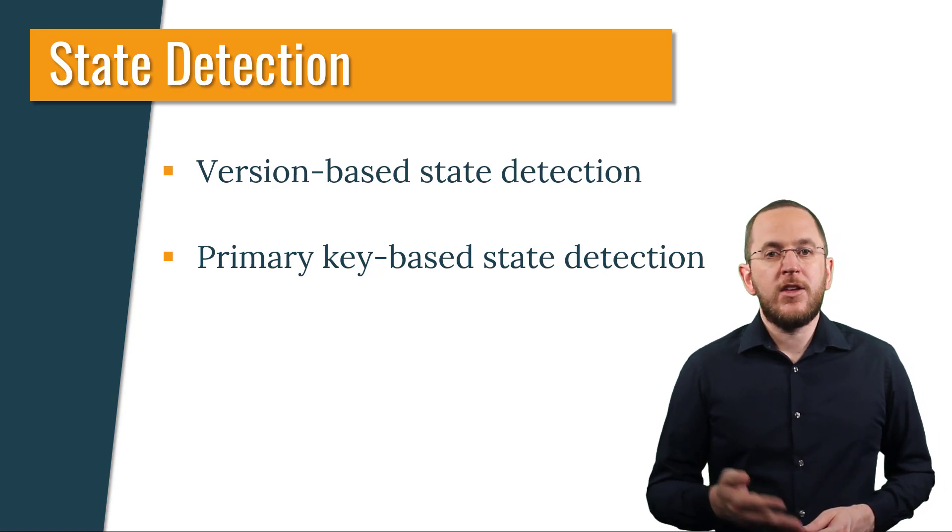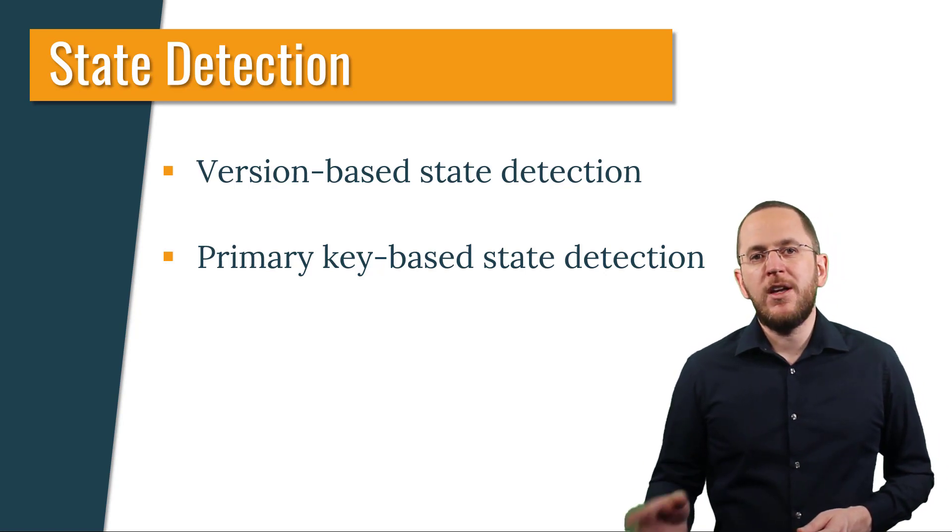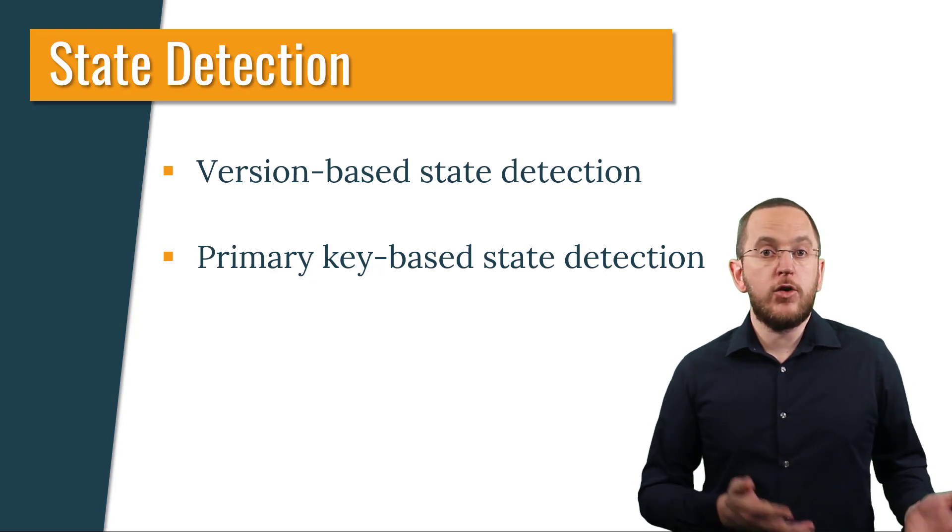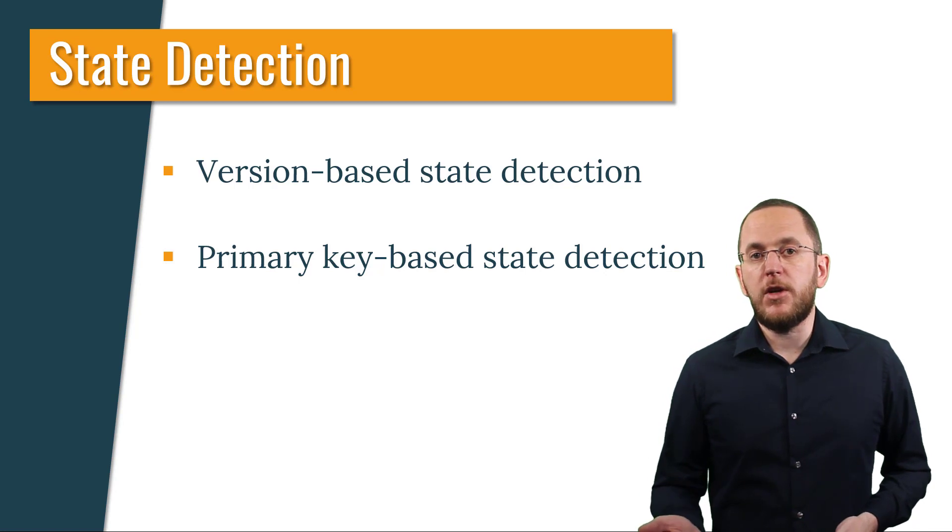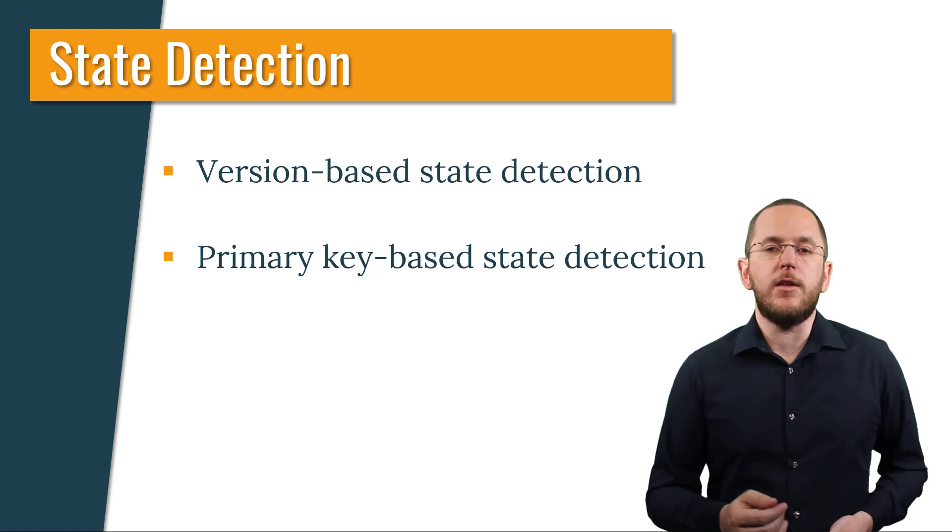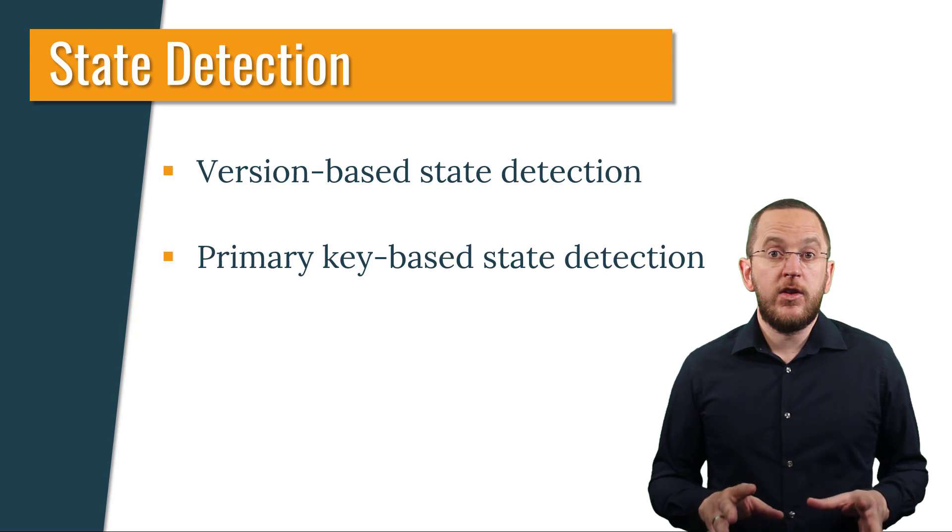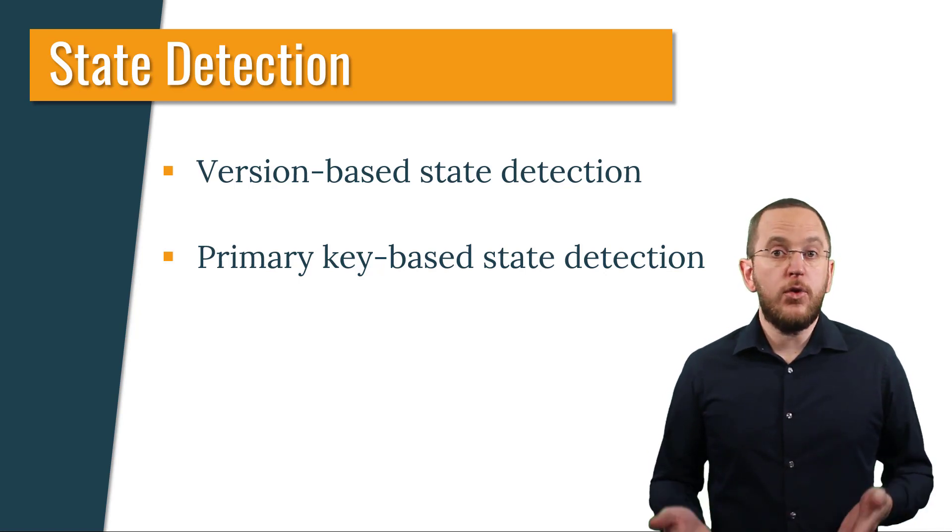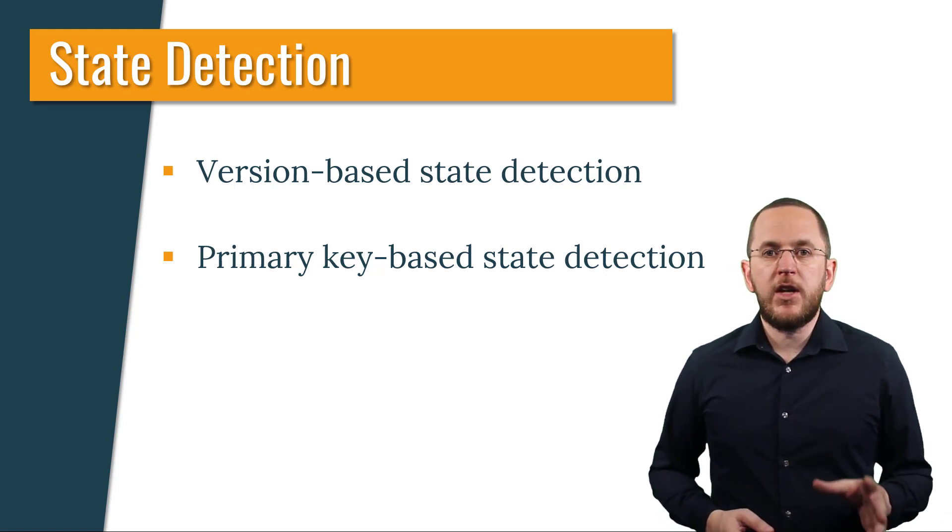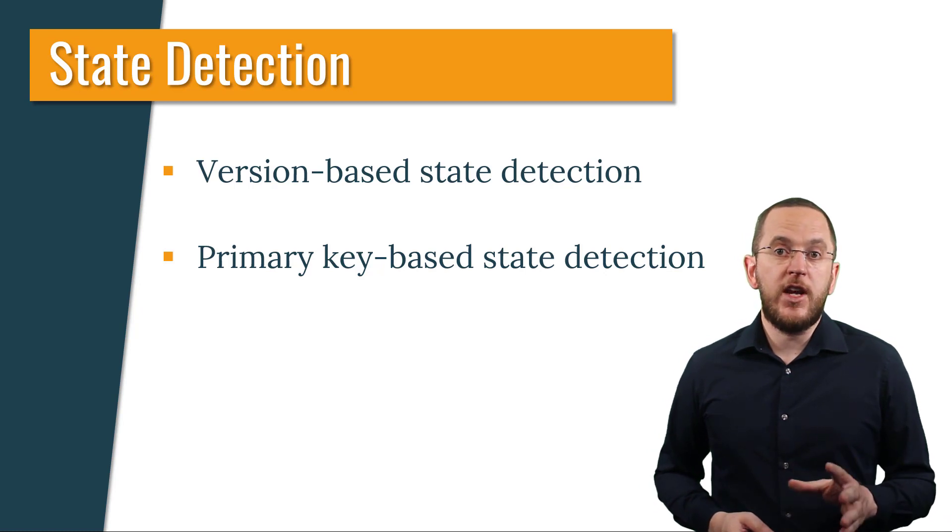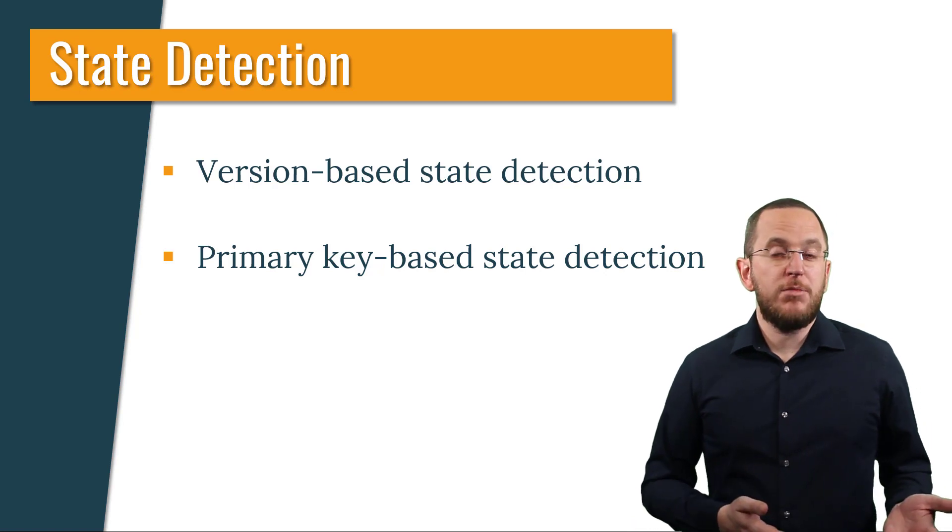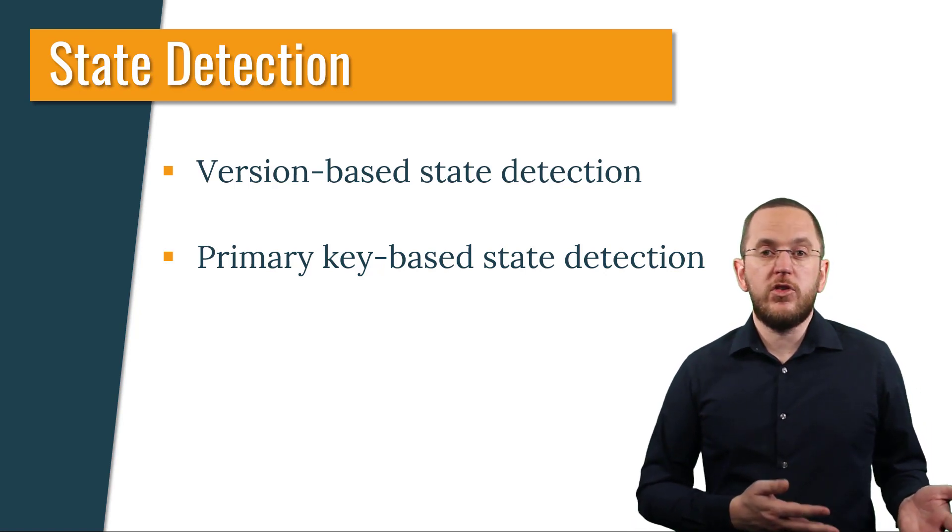If you ever used an entity class with a programmatically assigned primary key, you might have already recognized a downside of this approach. It only works for automatically assigned primary keys, for example when using a database sequence or auto-increment column. The reason for that is that if you assign the primary key value of a new entity object programmatically, you need to do that before calling the save method on your repository. Otherwise, the primary key value will not be set when your persistence provider persists the entity object. But if you set it before calling the save method, Spring Data JPA can't detect that you want to persist a new entity object.